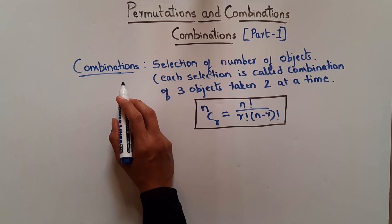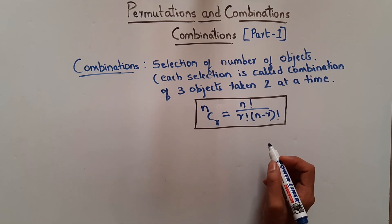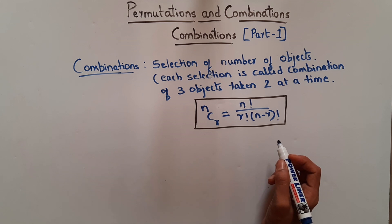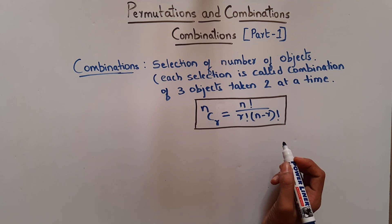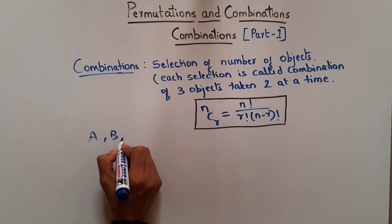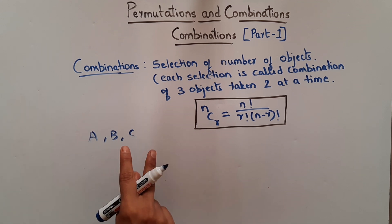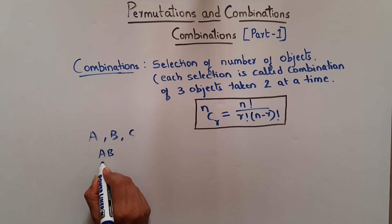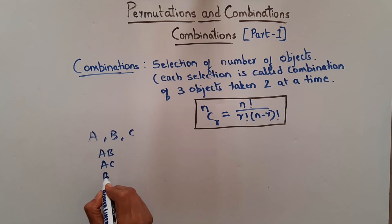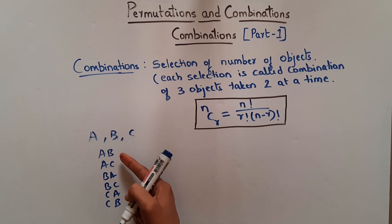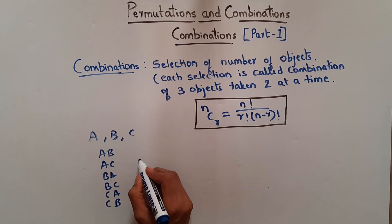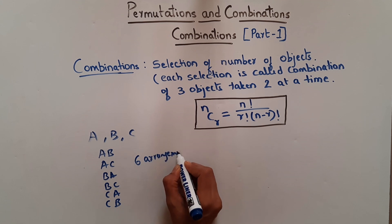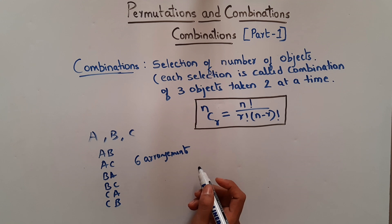Before going to the definition of combinations, let's first see how combinations differ from permutations. A permutation is an arrangement of different objects in a definite order. For example, with three letters A, B, and C, if we make two-letter words, we get: AB, AC, BA, BC, CA, and CB — that's six arrangements, taking two letters at a time. This is permutations.